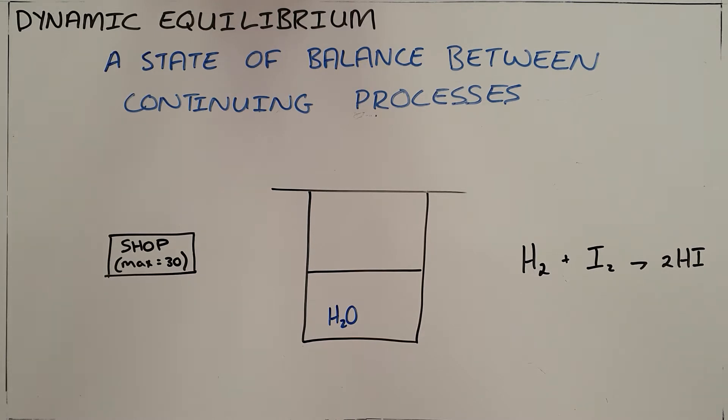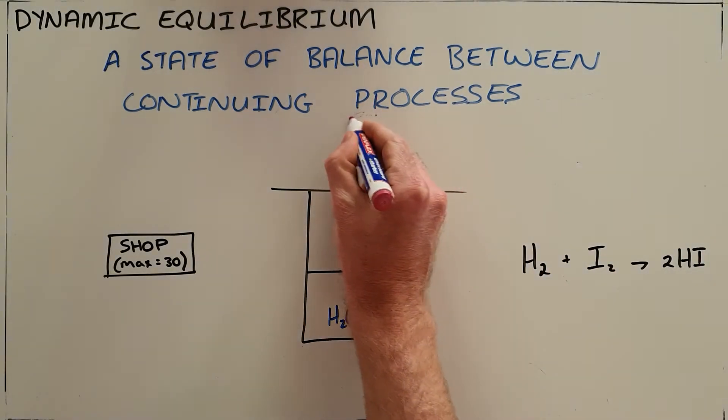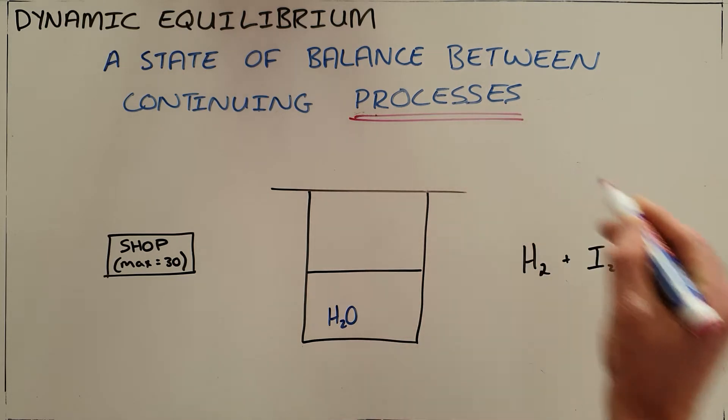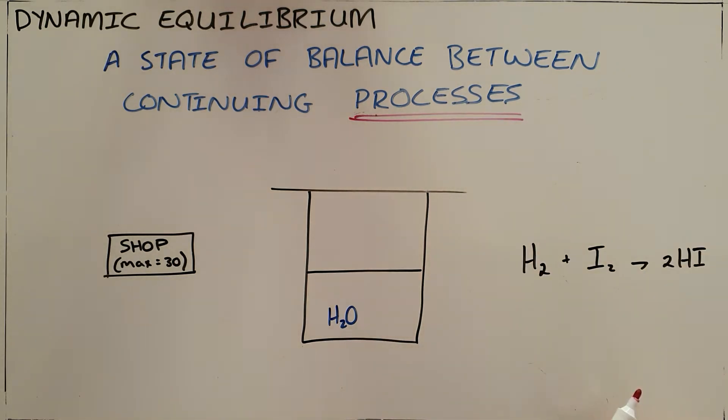The large difference here is that a dynamic equilibrium refers to any process, not only chemical reactions. It can be something as simple as a shop that allows a maximum of 30 people in.